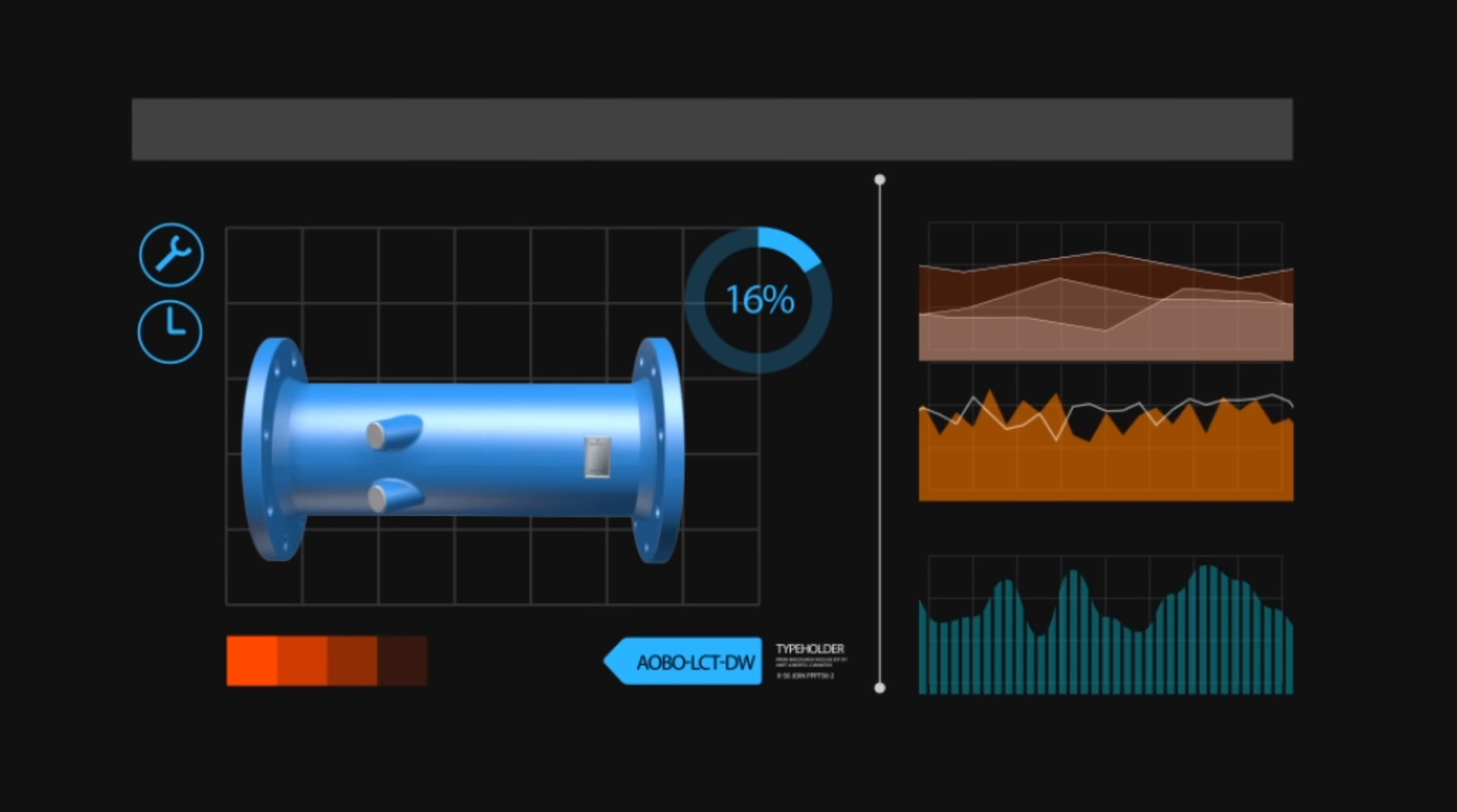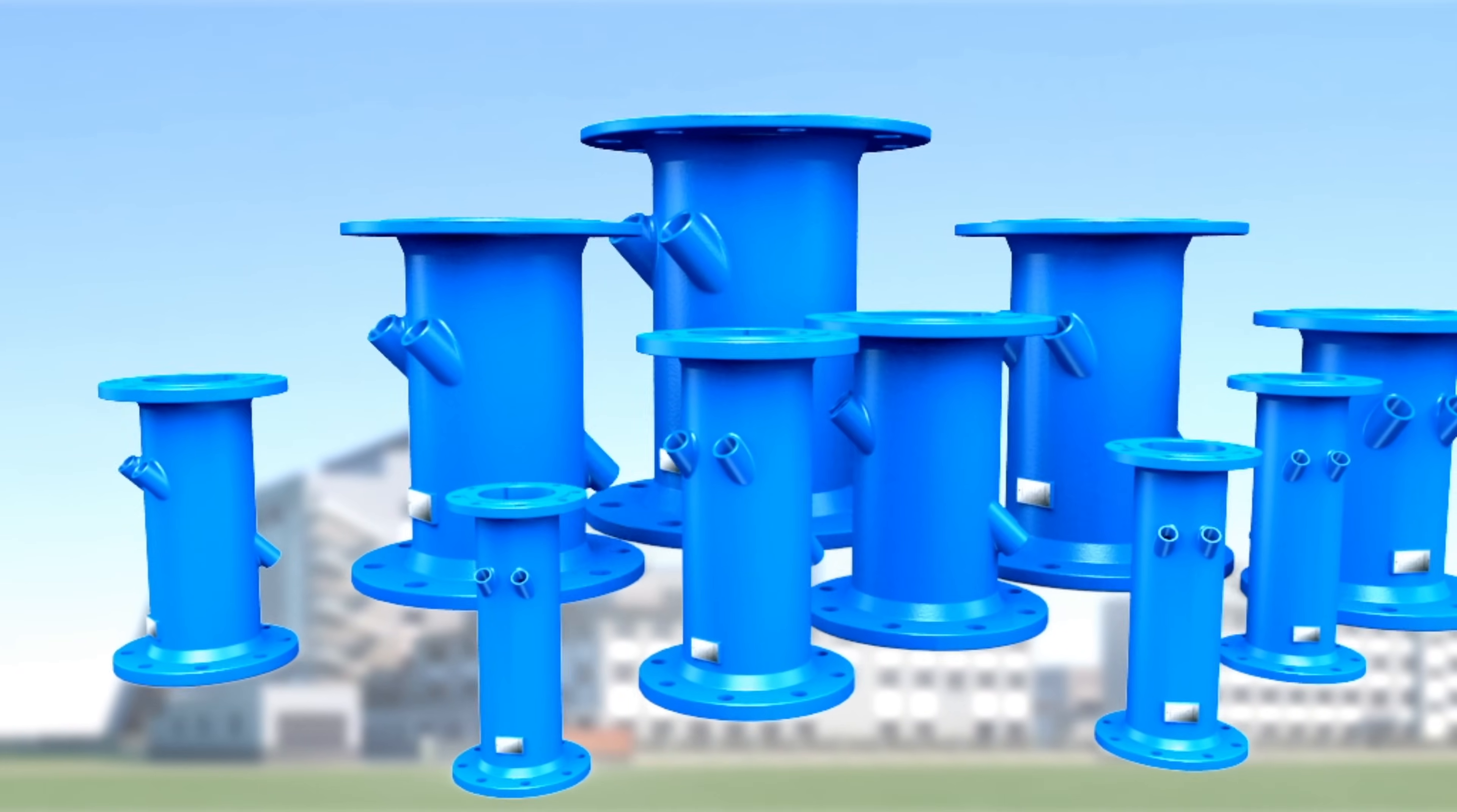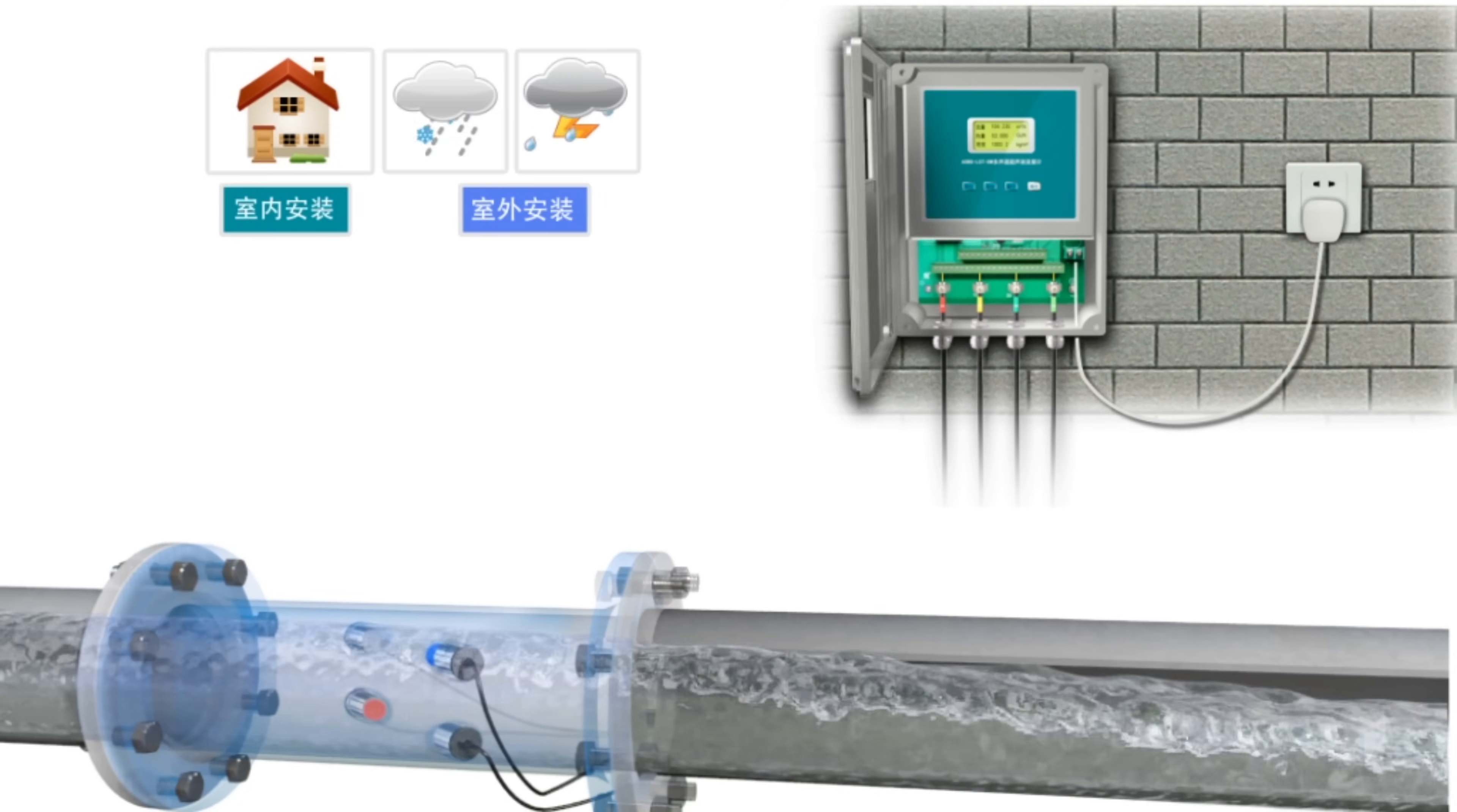The ultrasonic flow meter is able to measure medium temperature up to 150 degrees Celsius. The pipe diameter range is from DN50 to DN1600 mm. This ultrasonic flow meter is provided with IP68 protection and can be installed and used indoors or outdoors.